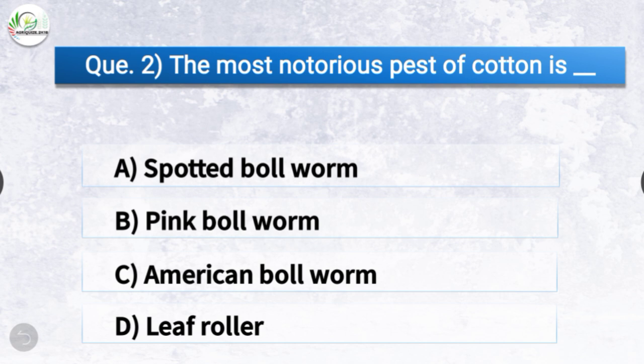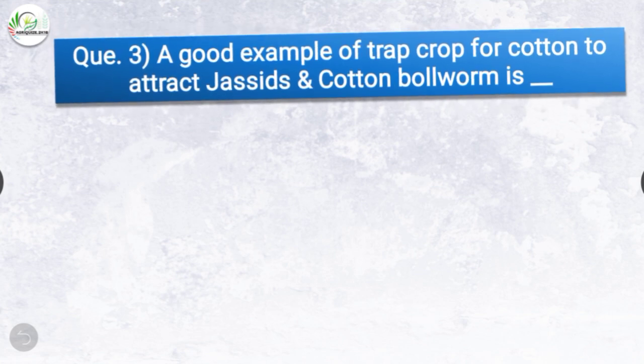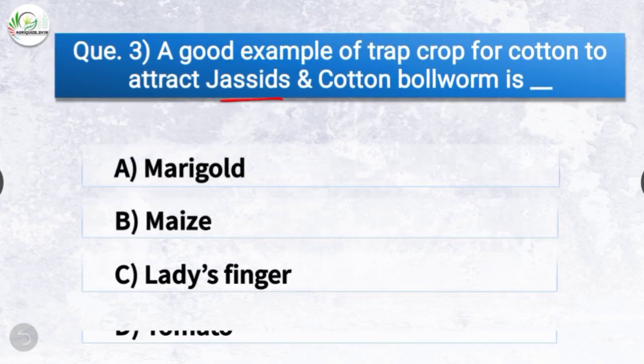Question number two: The most notorious pest of cotton is dash. The options are spotted bollworm, pink bollworm, American bollworm, or leaf roller. The correct answer is option B, pink bollworm — the most notorious pest of cotton is pink bollworm.